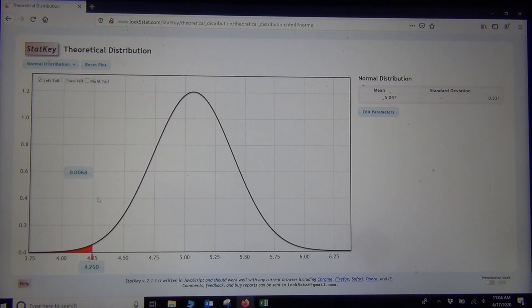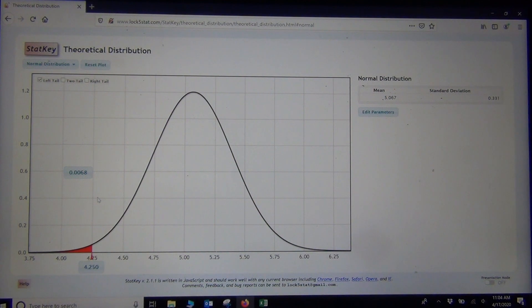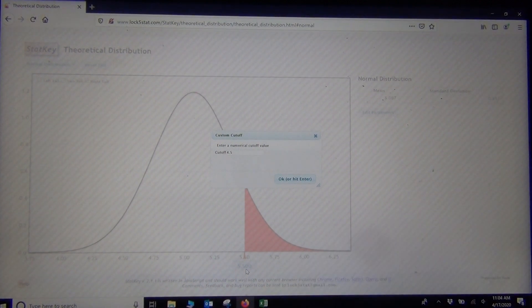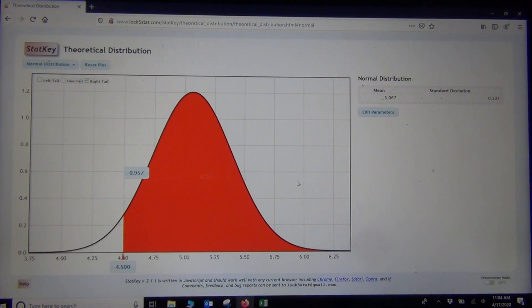Okay, so now if I want, what if I want, what percentage of women have a wrist circumference greater than 4.5? So greater than, I would, again, I would click right tail, but then on this bottom box, I would type in 4.5. All right, and there we go, about 0.957 would be the answer. So about 95.7% of women have a wrist circumference above 4 1/2 inches.